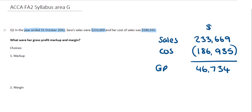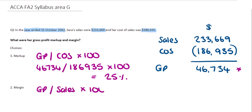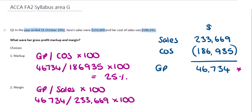Now we have our gross profit, which makes it easier to calculate markup and margin percentages. Markup looks at how much extra on top of cost of sales was added to reach the sales figure — expressed as a percentage of cost of sales. Gross profit divided by cost of sales, multiplied by 100, gives markup: $46,734 divided by $186,935 equals 25%. Margin looks at the relationship between gross profit and sales: $46,734 divided by $233,669 gives a margin of 20%.